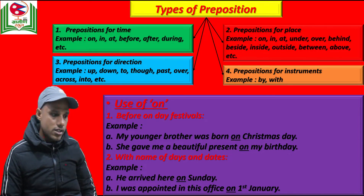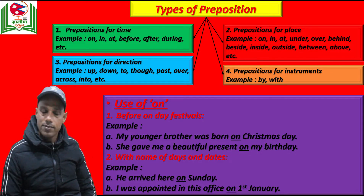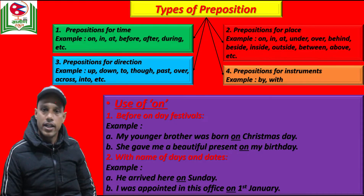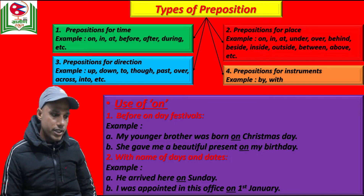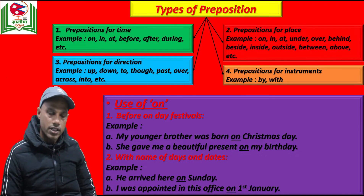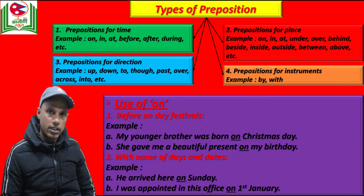The next condition where we use preposition 'on' is with the name of days and dates. For example: he arrived here on Sunday. I was appointed in this office on 1st January. You can see — on Sunday, on 1st January. Sunday, Monday, Thursday — these are names of days, and before dates like 15th February, we use preposition 'on'.